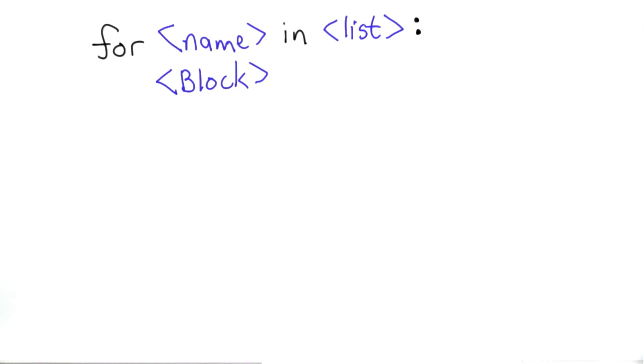The structure of a for loop is like this. We have the keyword for followed by a name, and this is a new name for a variable that we can introduce. Then the keyword in followed by a list, and this is any expression which evaluates to a list followed by a colon. So this is quite similar to what we've seen for the structure of a while loop and an if statement with a block inside the for.